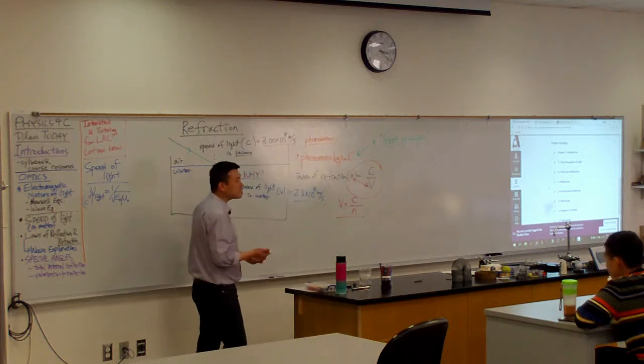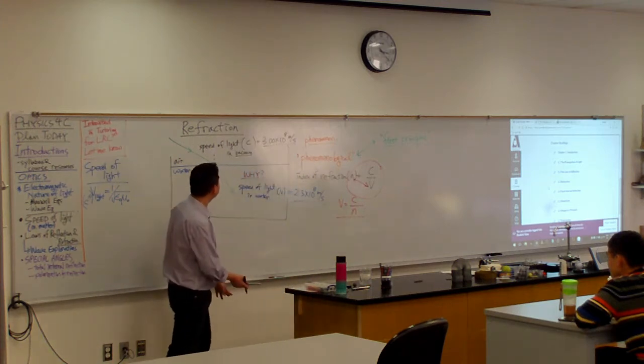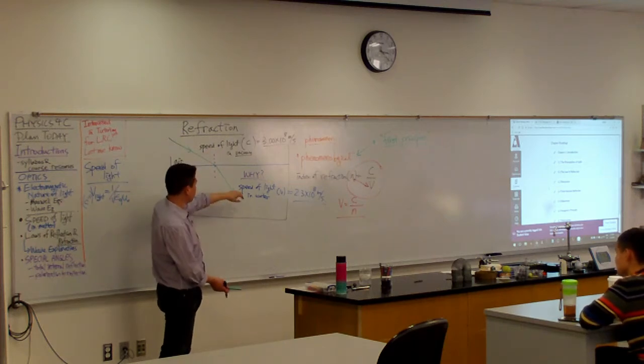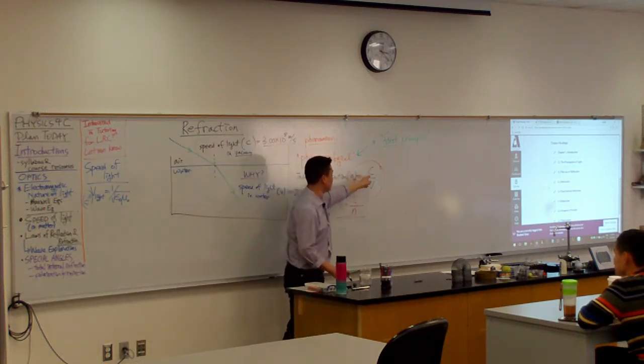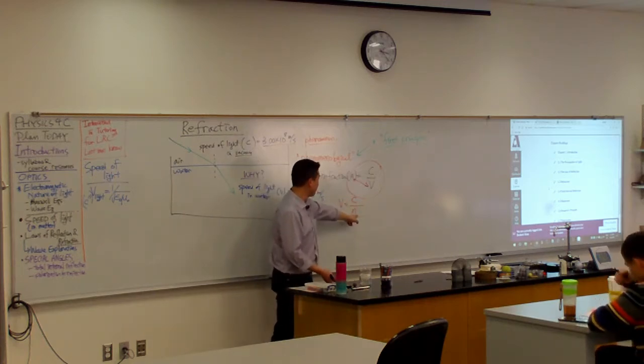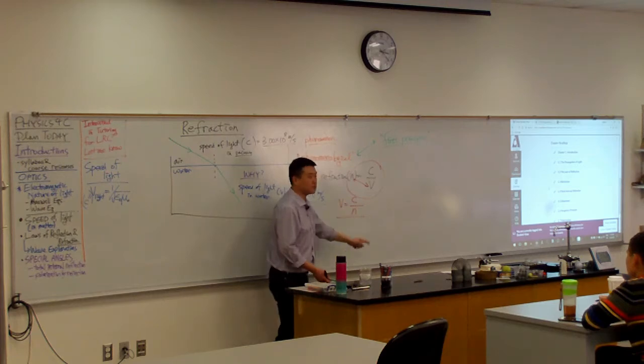Imagine you have an annoying younger sibling who keeps asking you why. You tell your younger sibling that light bends as it enters a different medium because the speed of light is different there. In fact, I can even tell you that this is how they are different - this is the speed of light in the medium, C divided by N. Anybody here know what the value of N is for water?